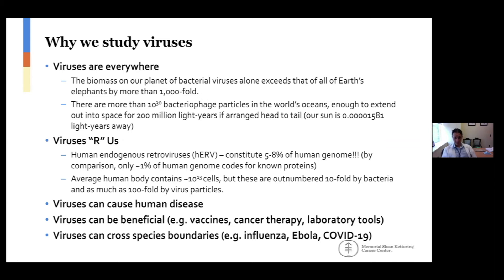Viruses are not just everywhere around us — viruses are actually in us. A large portion of the human genome is actually constituted by endogenous retroviruses that got integrated into our genomes at some point during evolution. About 5 to 8% of the human genome actually contains viral sequences. By comparison, only 1% of the human genome actually codes for known proteins that make us as we are. The average human body contains 10 to the 13 cells, but these are outnumbered by bacteria by approximately 10-fold, and by viruses — most of which are bacterial viruses — by as much as 100-fold. So we are actually more viruses than we are humans.